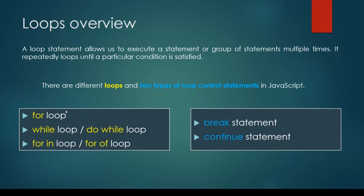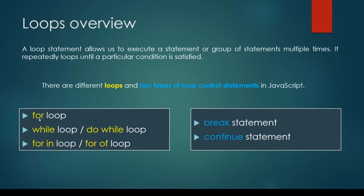There are several loops such as the for loop, the while loop, the do while loop, the for in loop, and the for of loop. And there are two types of loop control statements. With the help of break and continue we are able to control these kinds of loops.